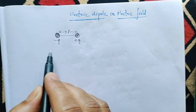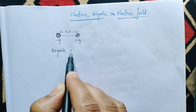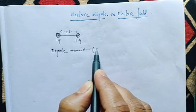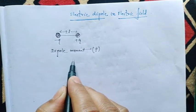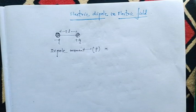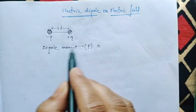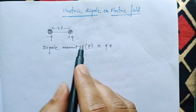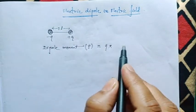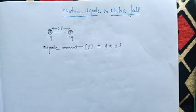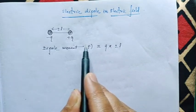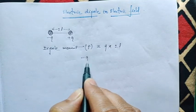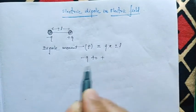Now, dipole moment. Dipole moment is denoted by the term P. P is the product of either any one charge Q into the distance between the two charges, which is 2L. This P is a vector quantity and it is directed from minus Q to plus Q.